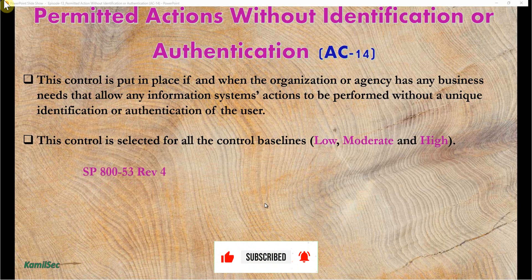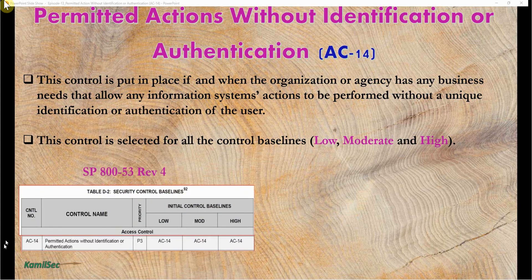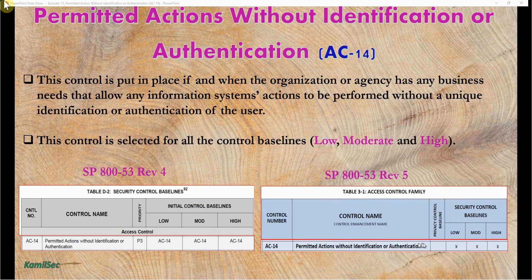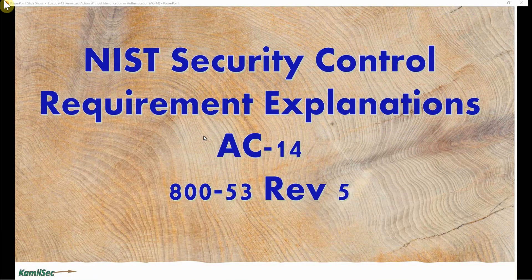For example, in REF4 we can see that AC-14 permitted action without identification or authentication is selected for the low baseline, the moderate baseline, and the high baseline. Likewise in REF5, AC-14 is also selected for the low baseline, the moderate baseline, and the high baseline. Now let's read the control requirement for AC-14 in the 800-53 Revision 5 document.